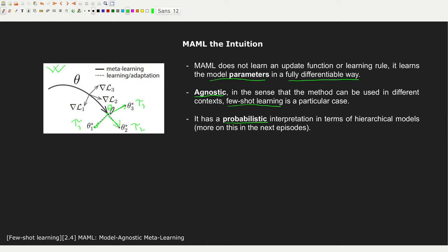This point theta in weight space represents a good compromise — a generic set of parameters that can rapidly adapt toward task-specific parameters. We want to optimize two losses: a first across-tasks loss to find theta, and then a task-specific loss to find the specific parameters for each task.